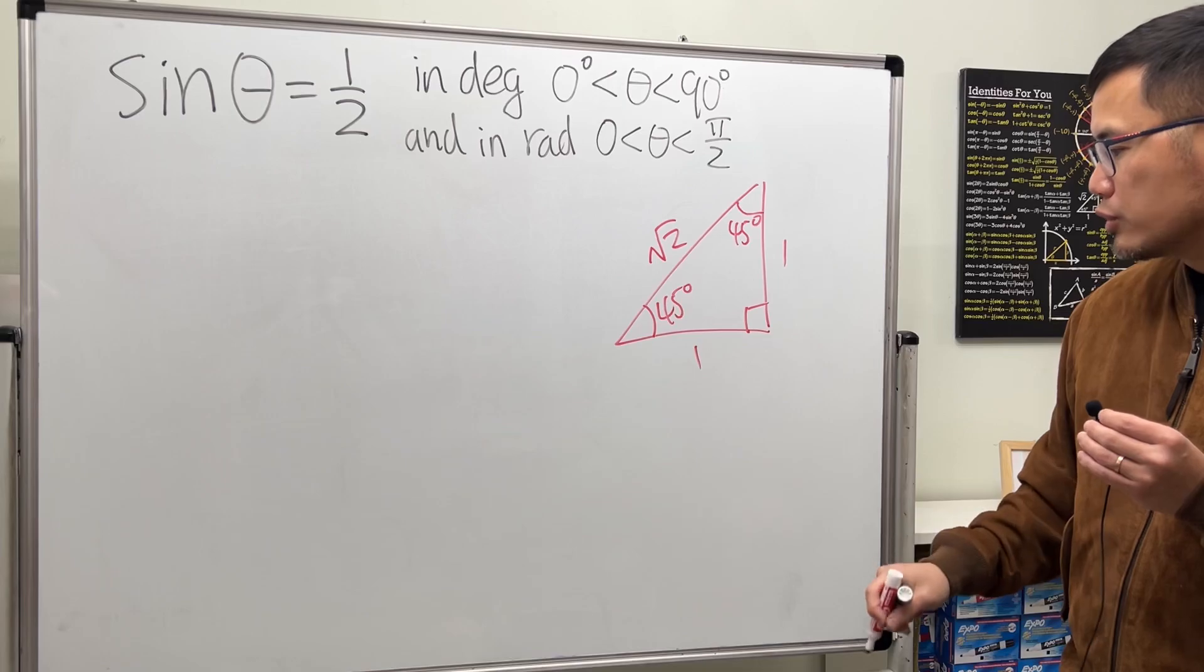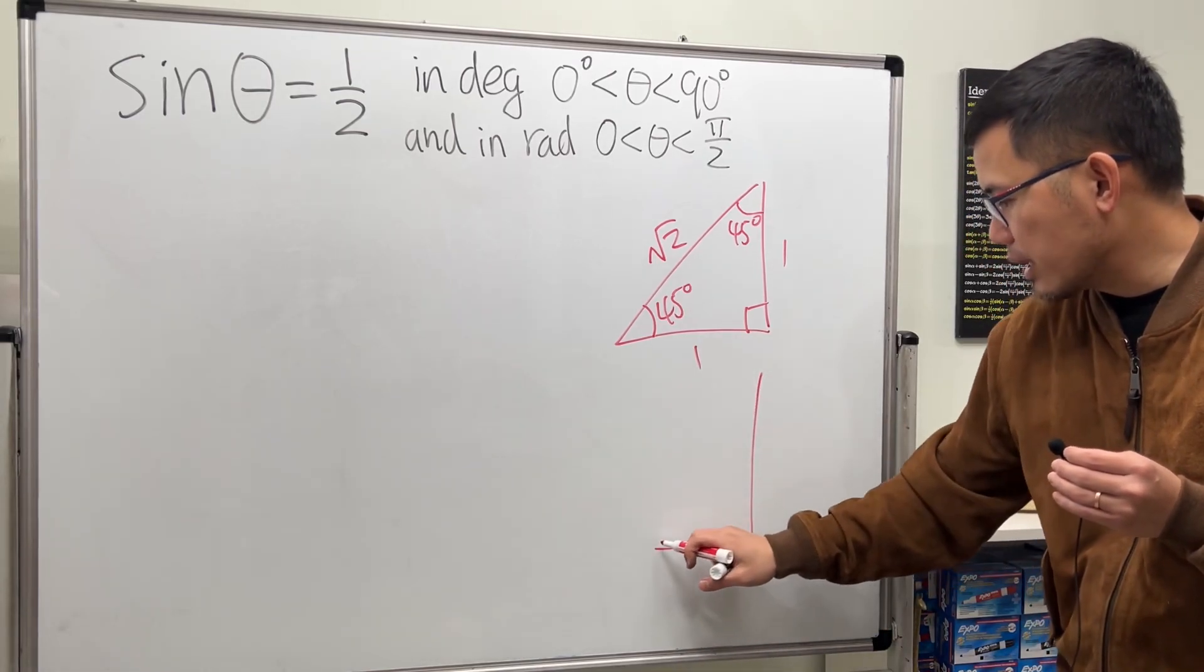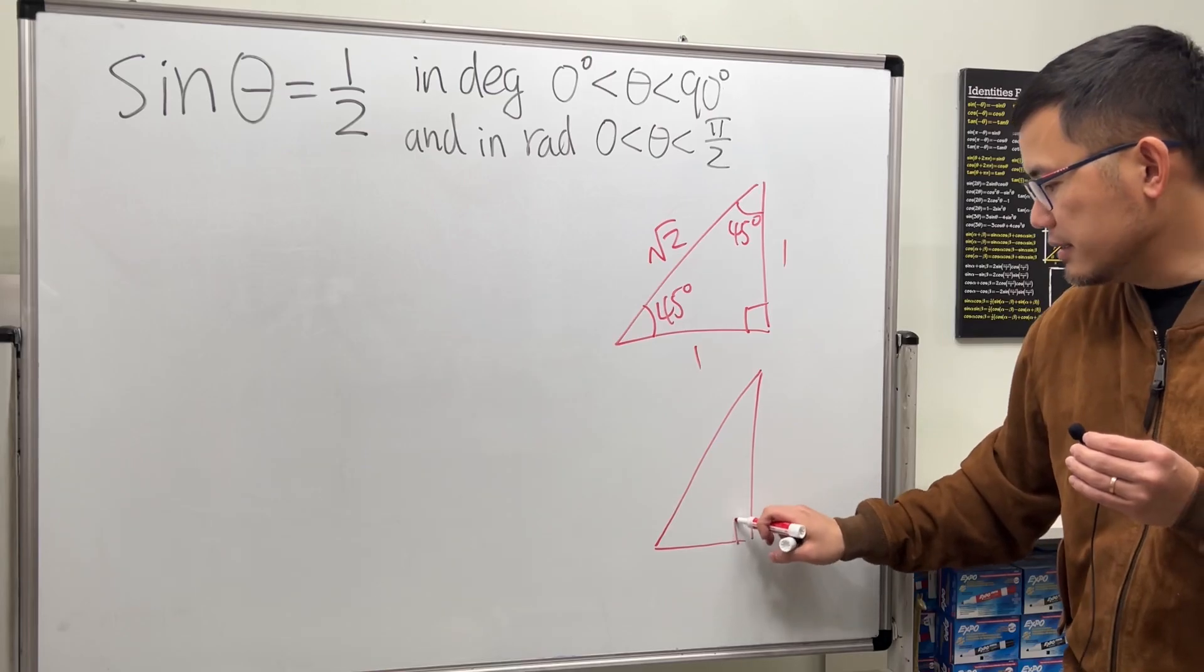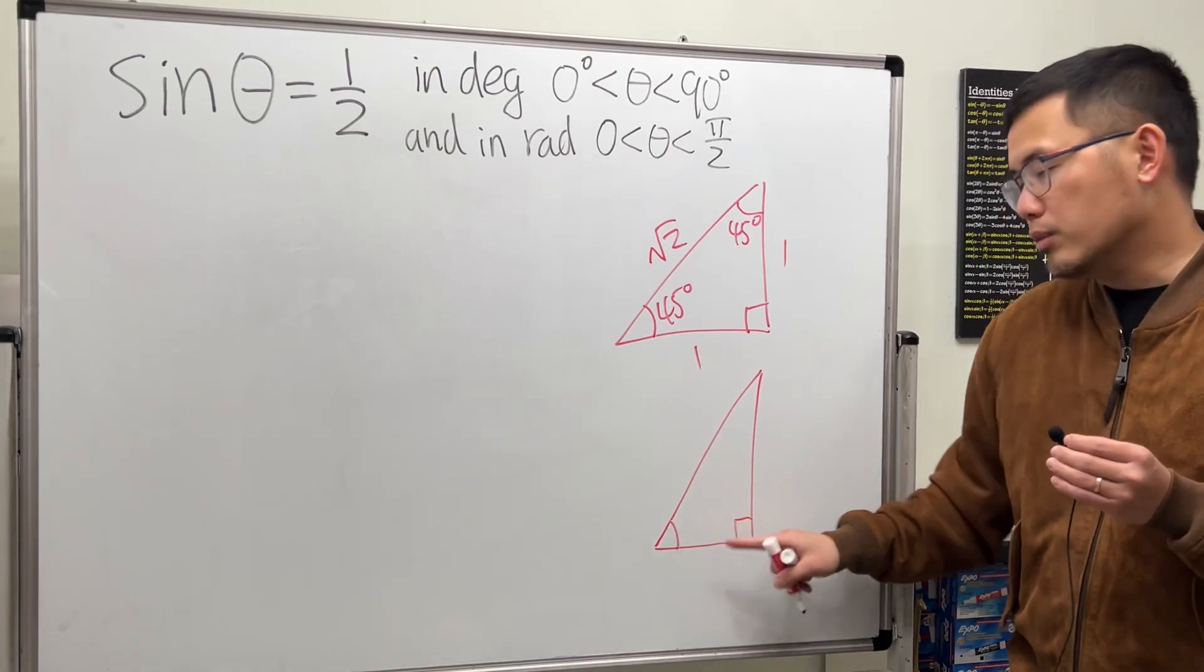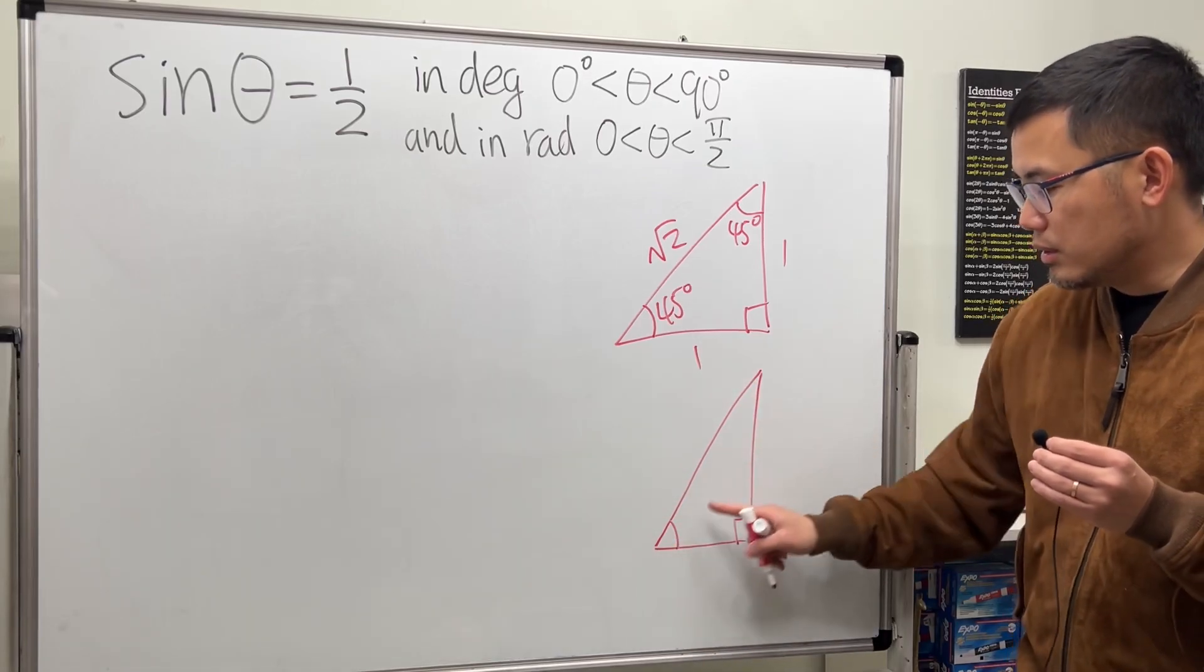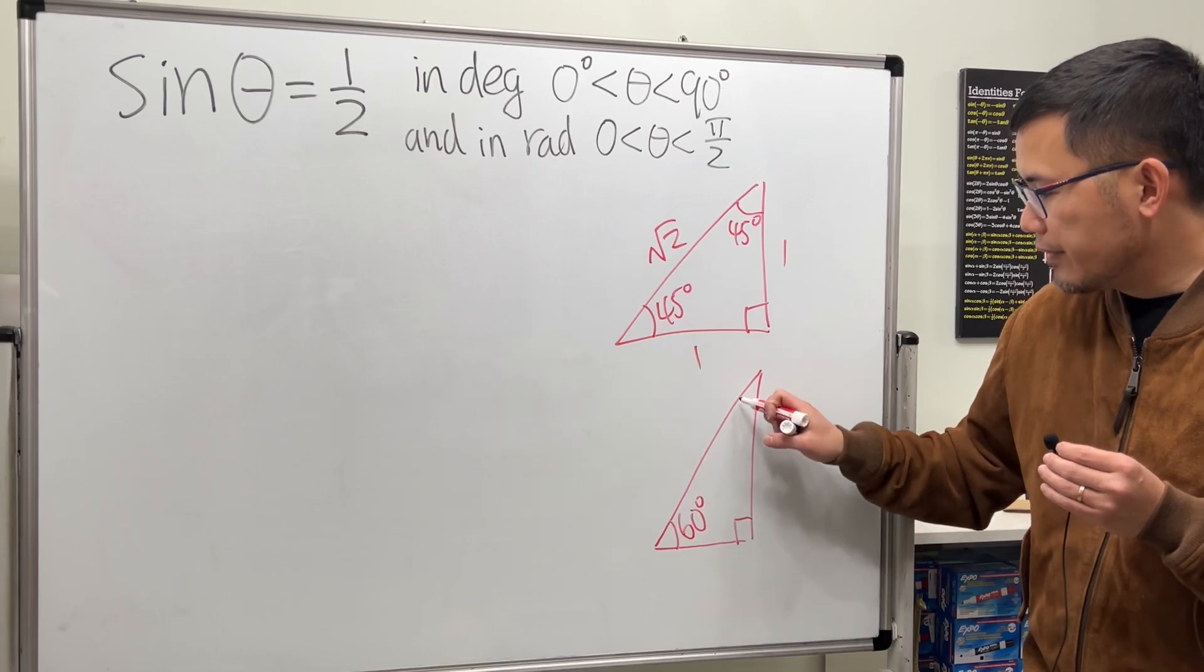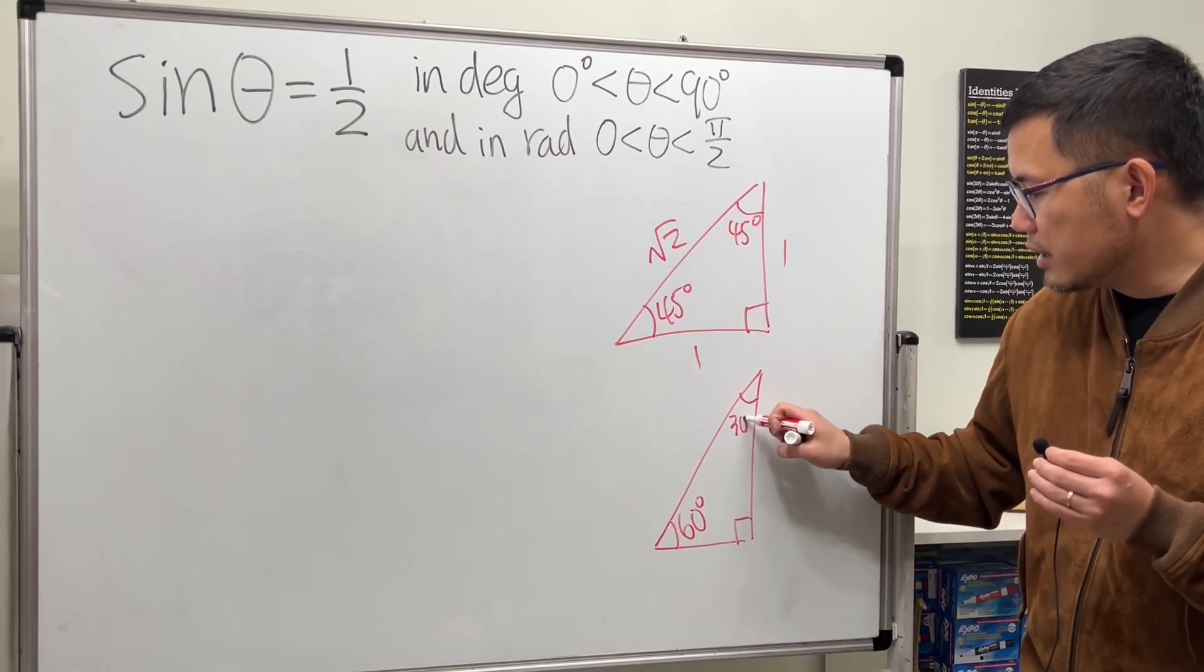And the other special right triangle is the 30-60-90 special right triangle. Here it's the bigger angle because that's away from the longer side, not the longest though. So this right here is 60 degrees. This right here is 30 degrees.